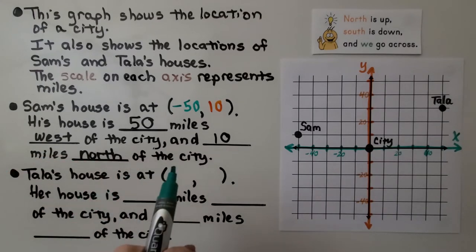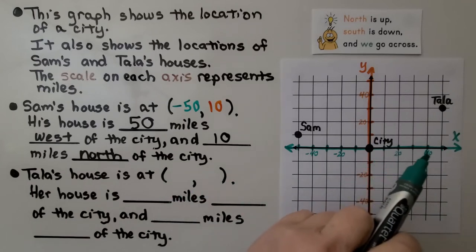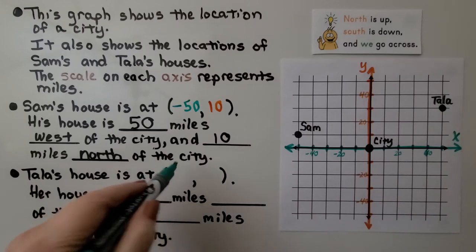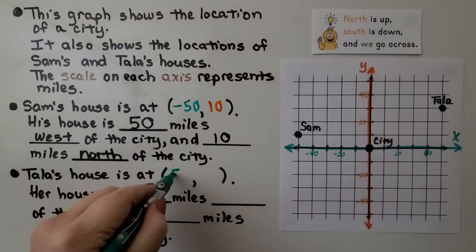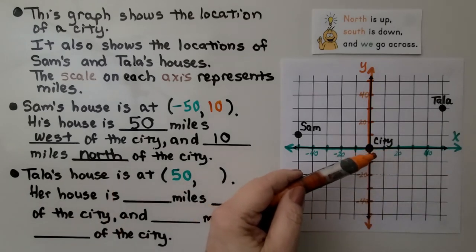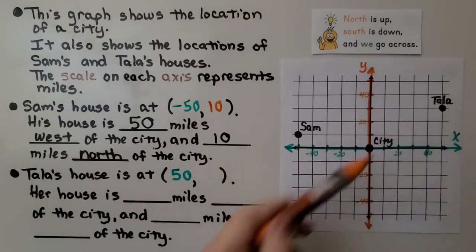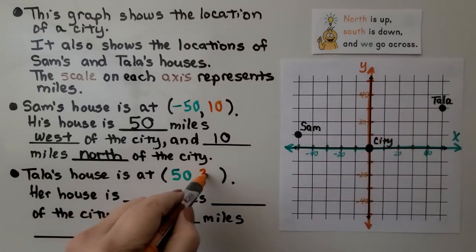Tala's house is at, now we need the X and Y values for Tala's house. She's 20, 40, that must be 50, and that's a positive 50. And the Y value, we look, and she's 10, 20, 30 for Y, and that's a positive 30.